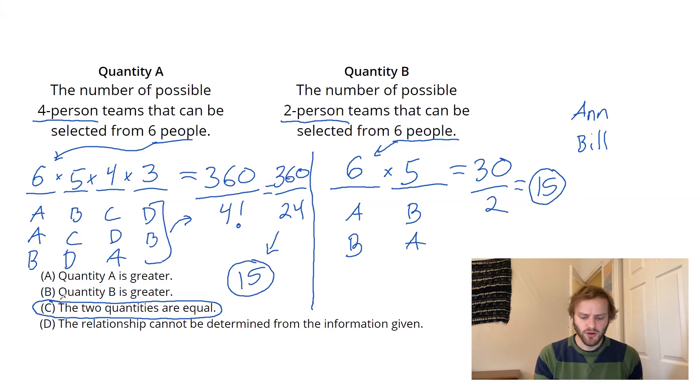And then number two, watch out for this. Watch out for occasions where you have to divide away some over counting. It often happens when you're picking a group where each spot on the group, the difference between one spot and the other doesn't really matter.